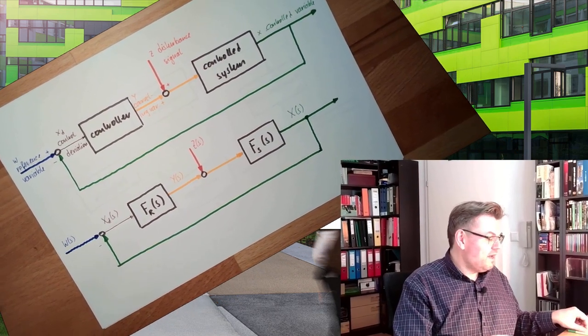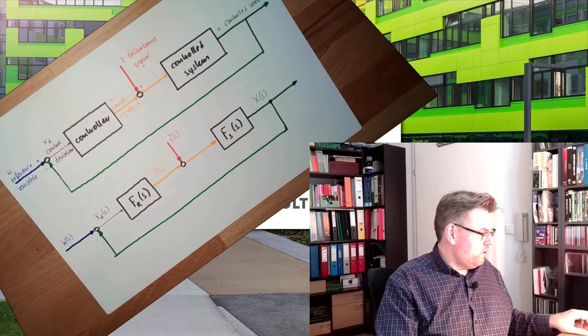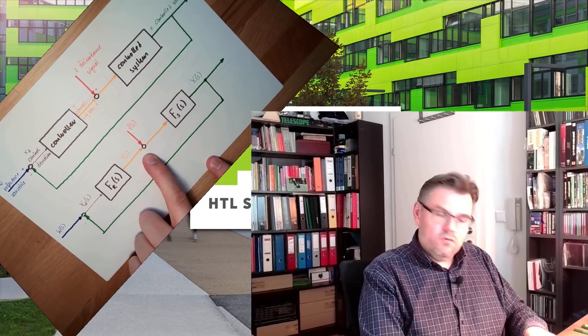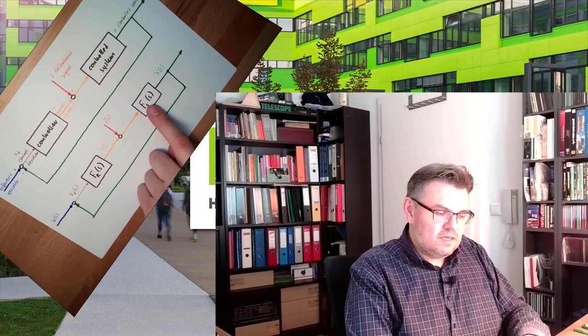This will be done in the next video. For now, it's important that you understand how we get to this simplification — that the control element is inside the controller and the measurement is inside the system. Next time we're going to calculate different transfer functions and try to read out what would be ideal. Think already about whether we could reach this ideal situation. Thank you very much for listening. Goodbye.